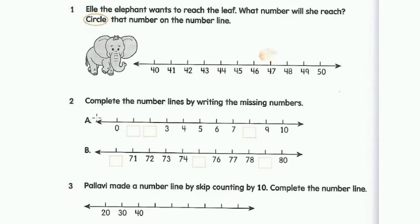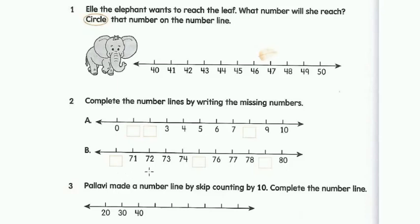Second question: complete the number lines by writing the missing numbers. Starting from 0: after 0 comes 1, then 2, 3, 4, 5, 6. The numbers are in counting order, so after 7 comes 8. For part B, starting from 71: before 71 is 70, then 71, 72, 73, 74, 75, 76, 77, 78, 79, 80. All the numbers are in counting order.